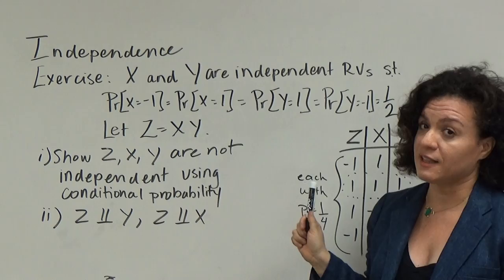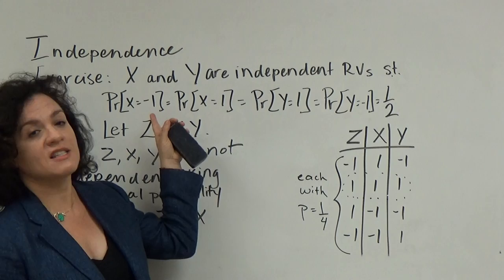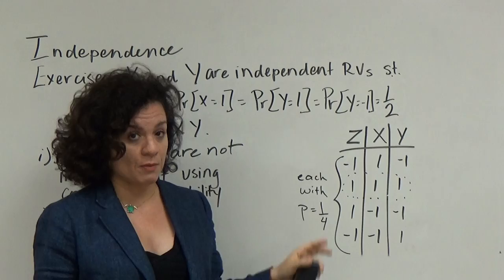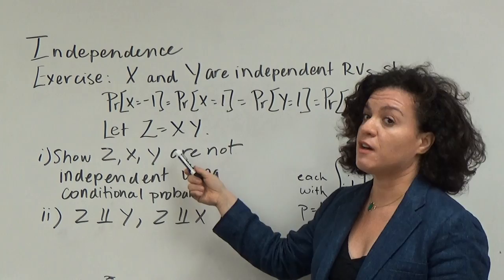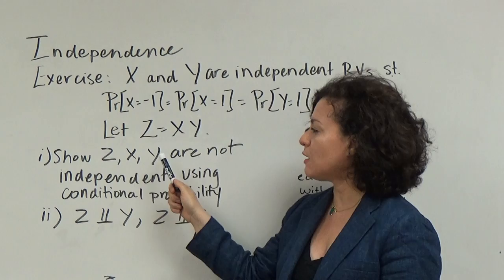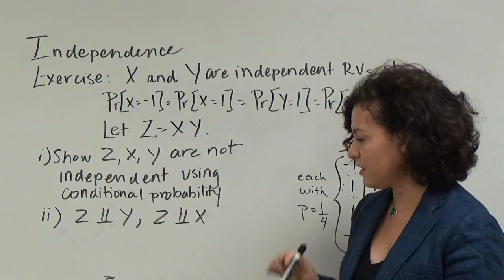We're also told that x and y are equally likely to take on the values of negative 1 or 1, meaning the probability that x equals negative 1 or 1, or that y equals negative 1 or 1, is equal to 1/2. We're also going to consider the random variable z, which is the product of x and y. The first exercise is to show that x, y, and z are not independent using conditional probability.